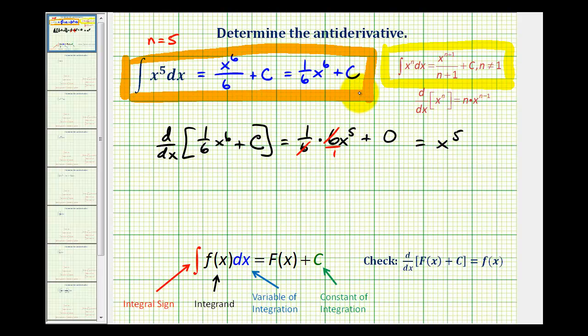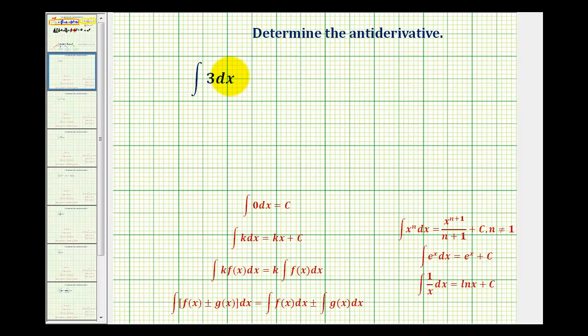Let's take a look at another example. To determine the anti-derivative of three with respect to x, we want a function or family of functions that has a derivative of three. There is a special formula here which tells us that the indefinite integral, or the anti-derivative of k with respect to x, is equal to kx plus C. So applying this formula, the anti-derivative of three with respect to x would be three x plus C.